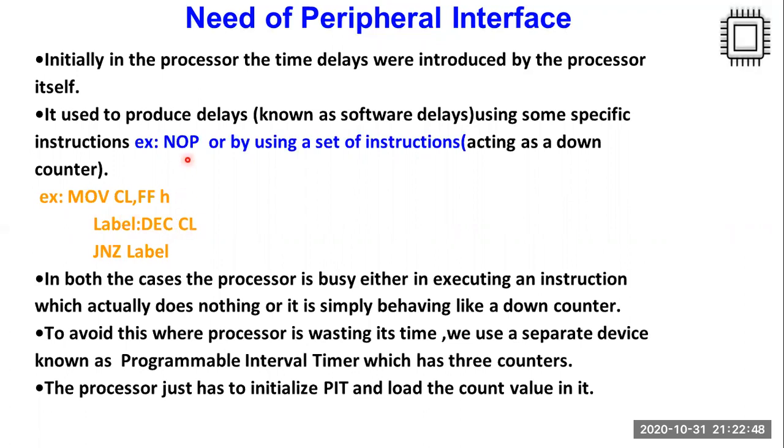In this case, or maybe in the earlier case when an NOP instruction was being executed, the processor was busy doing actually nothing or simply behaving like a down counter, which means it is wasting its time. In order to avoid this, where the processor is simply behaving like a down counter, we use a separate entity on the system or a separate device on the system, which is known as programmable interval timer.